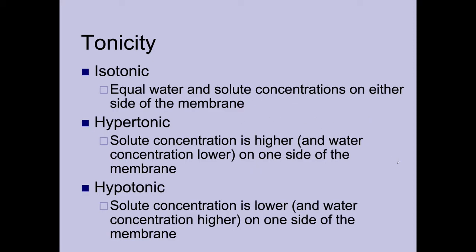Diffusion brings us to the terms of tonicity. When diffusion is occurring, it occurs in different solute concentrations. If a solution is isotonic, meaning equal solute concentration inside and outside the cell, then diffusion in either direction is equal — we're at equilibrium. In a hypertonic solution, the concentration of solute is higher on one side of the membrane than the other. So if there is a high concentration on one side and low on the other, the environment with higher concentration is hypertonic and solutes move toward the lower side.